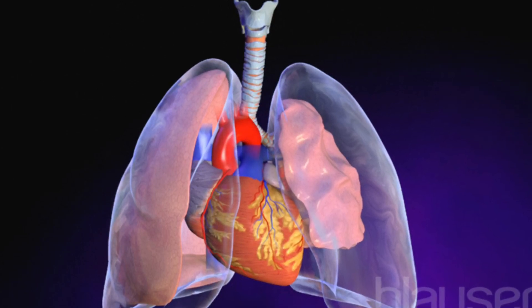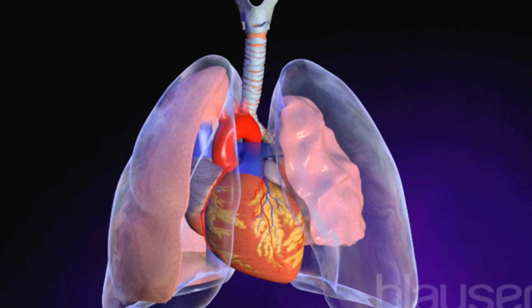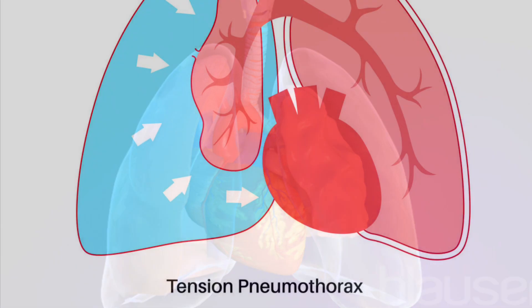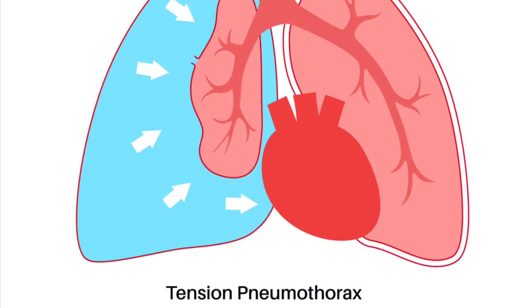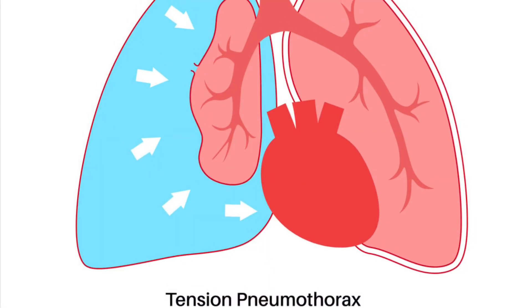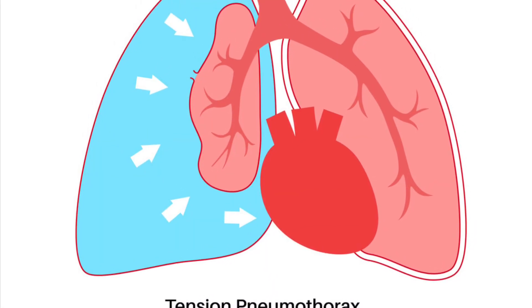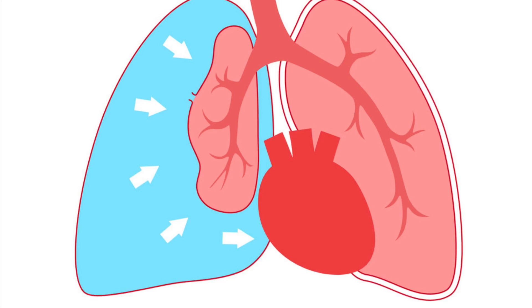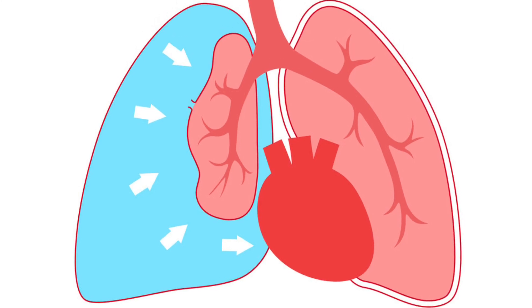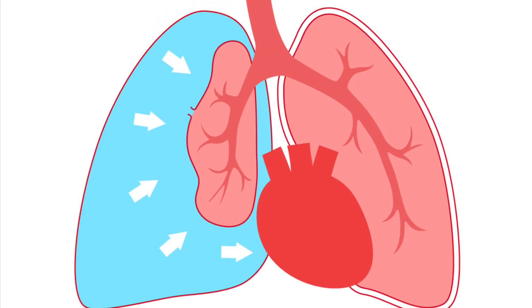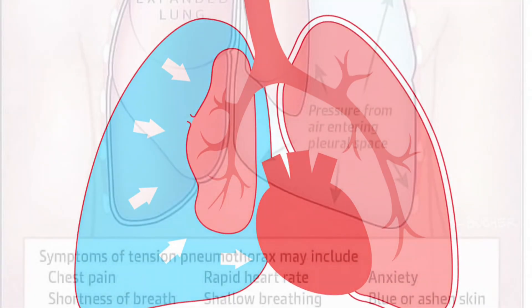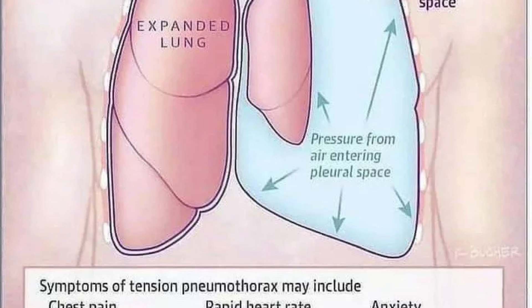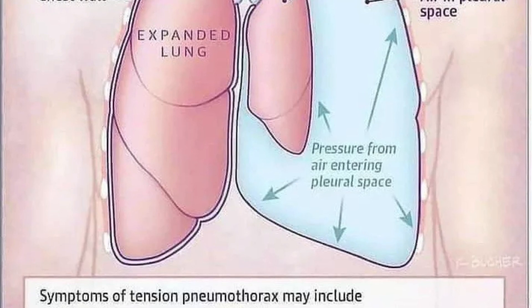Tension pneumothorax is when the pressure in the chest cavity becomes so great that it causes pressure on the mediastinum, which puts pressure on the organs inside such as the heart and the great vessels. The heart doesn't like being under pressure, so this causes a decrease in cardiac output and sends the patient into shock. This is a life-threatening condition and requires immediate intervention.